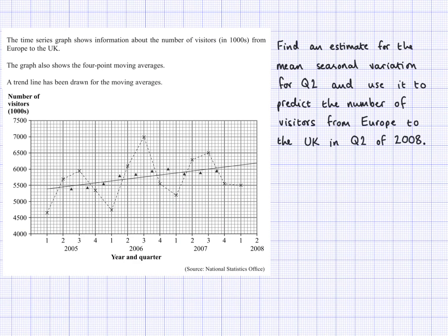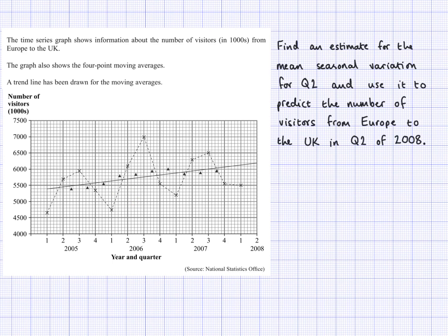Here's a question for you to try. I've given you a time series graph showing the number of visitors in thousands from Europe to the UK. A four-point moving average has been plotted and a trend line drawn, extended slightly. Find an estimate for the mean seasonal variation for quarter two, and use it to predict the number of visitors from Europe to the UK in quarter two of 2008.